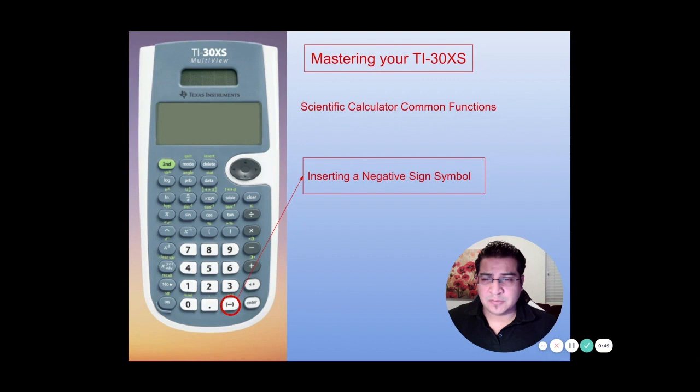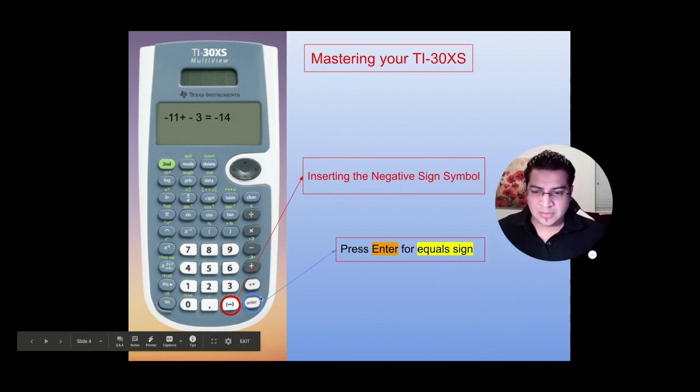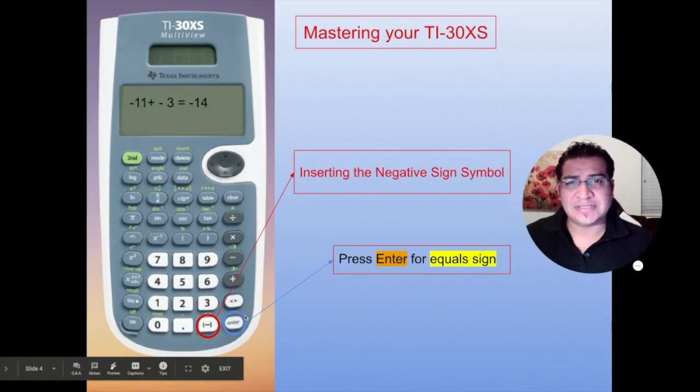So here is one of the main things you need to know: how to insert a negative number. So on the bottom here, that is the negative number. You can use that for operations like negative 11 plus negative 3, which would give a negative 14. There isn't an equal sign, so you press the enter sign, which is the same as the equal sign.